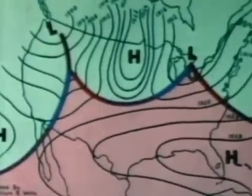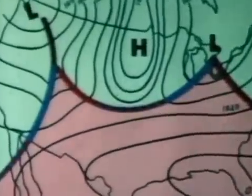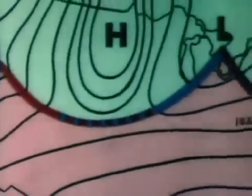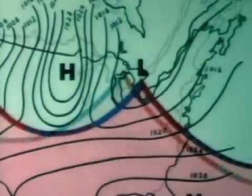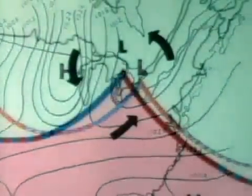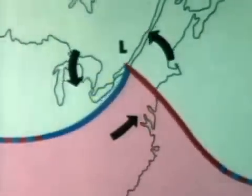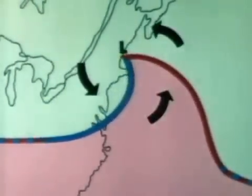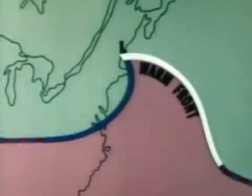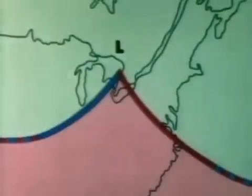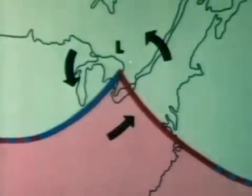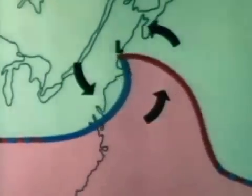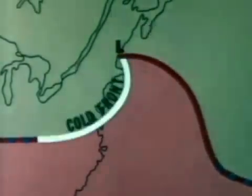When neither air mass pushes into the other, the front between them is called stationary. When the colder air mass retreats from the warmer, its trailing edge is called a warm front. When, however, the colder air mass pushes forward into the warmer, its leading edge is called a cold front.